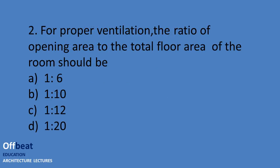For proper ventilation in a room, the ratio of opening area to total floor area of the room should be 1 to 10. That is, the ratio of the area of the window and door should be 1 to 10.